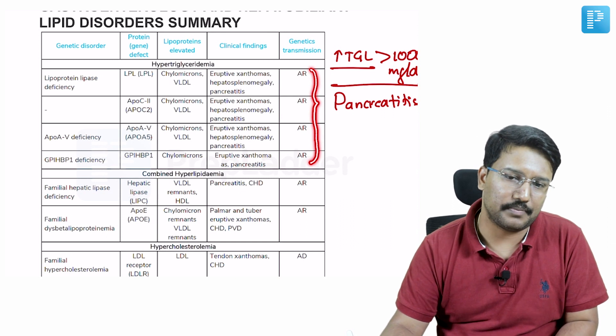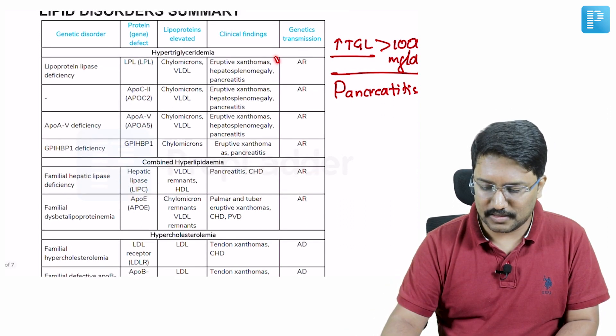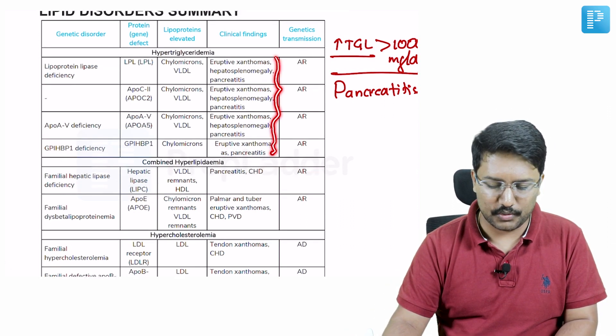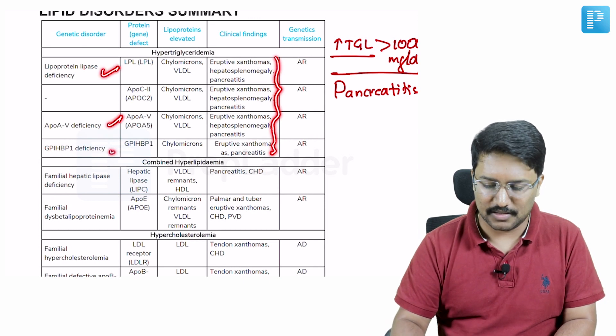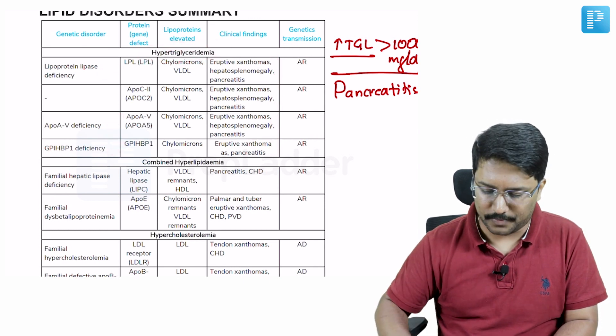all the common hypertriglyceridemic inherited conditions are inherited as autosomal recessive. So that way you can remember it better. Most of these clinical findings are also very similar. All you need to know is what are the enzyme deficiencies which cause hypertriglyceridemia.